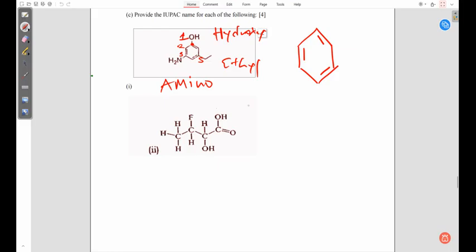When it comes to naming, we alphabetize. A comes first - amino has been given position 3, so 3-amino. Then E comes second, so that would be 5-ethyl.